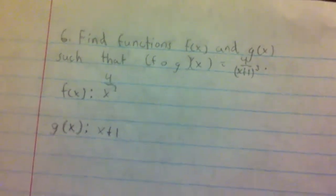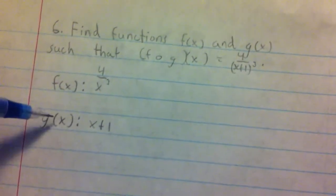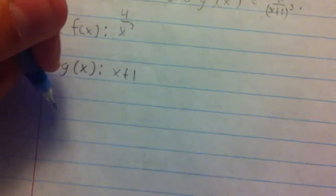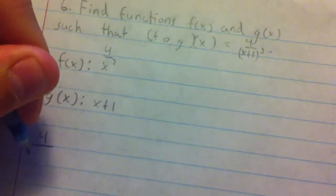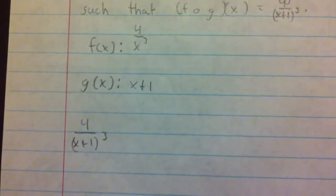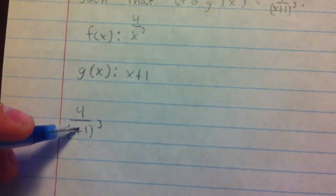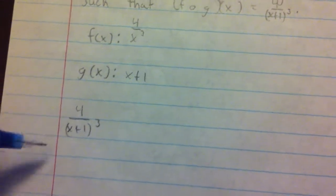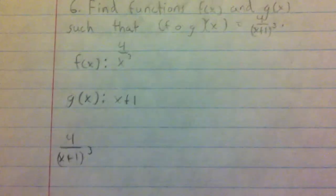To check to make sure that this is right, you would just plug g of x into f of x, which I'll do down below. So, f of x plus 1, parentheses, cubed. You see g of x there and f of x there, and that's how you do it. Thank you.